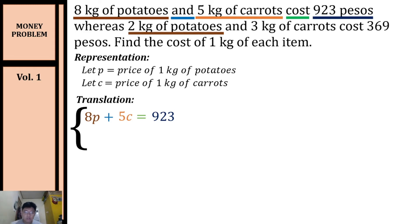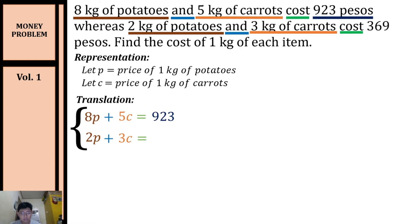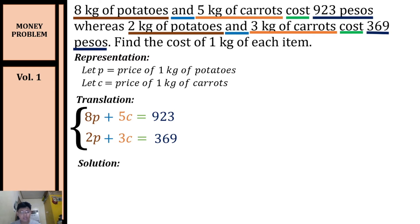Let's proceed to our second equation. Two kilograms of potatoes can be translated as 2p, plus three kilograms of carrots gives us 3c, it will cost 369 pesos. So our second equation will be: 2p + 3c = 369. Now that we have our first and second equation, we can proceed to our solution.